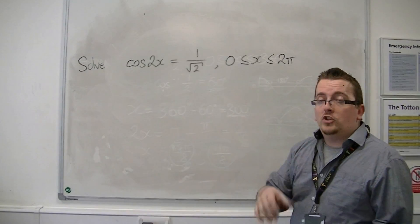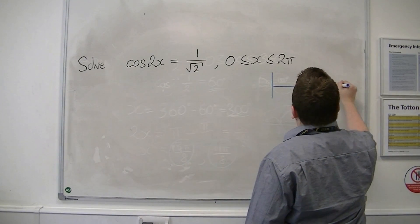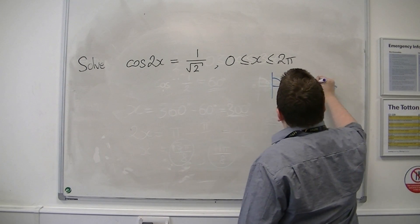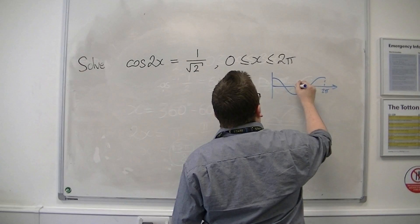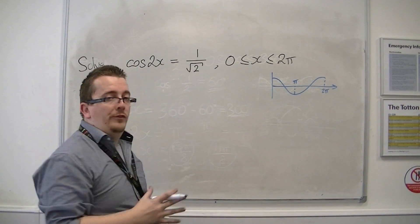So we sketch cosine, like we just did, but in radians. And we're doing it between 0 and 2pi. We just sketch the normal curve for cosine, not stretched in any way,